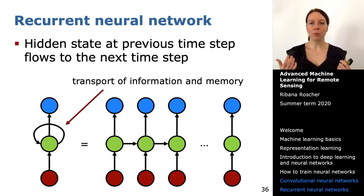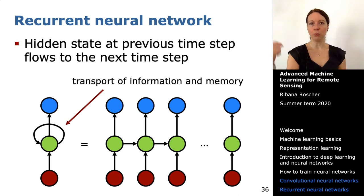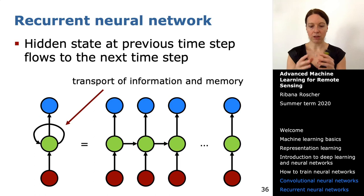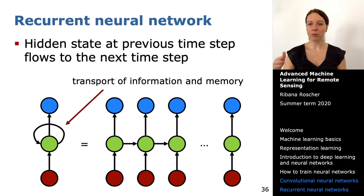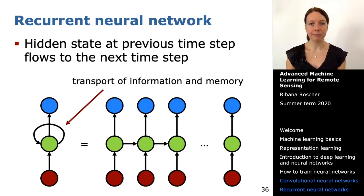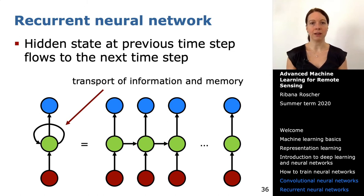In the literature, RNNs are illustrated with a loop — the green RNN module where information is combined and memory is transported through time. There's a compact representation on the left and an unfolded representation on the right; both illustrate the same architecture. The unfolded version can be thought of as multiple copies of the same network, each passing a message to its successor.